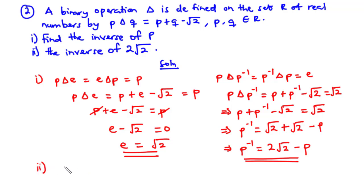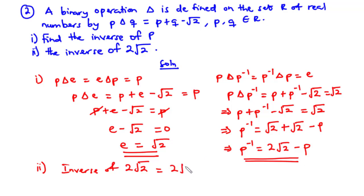For part (ii), we find the inverse of 2 root 2 by substituting p equals 2 root 2 into the expression p-inverse equals 2 root 2 minus p. So the inverse of 2 root 2 equals 2 root 2 minus 2 root 2 equals zero. Therefore the inverse of 2 root 2 is equal to zero. That's it for today's video — thanks for watching, and see you in the next video.